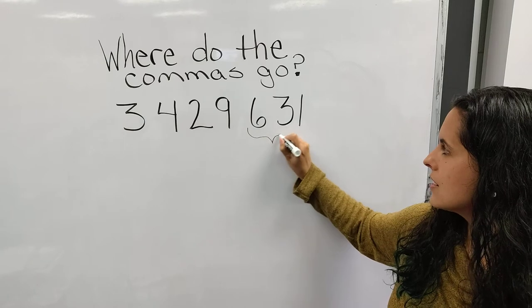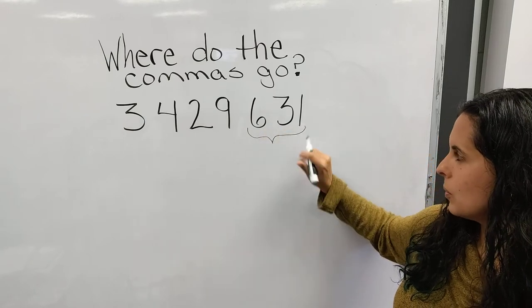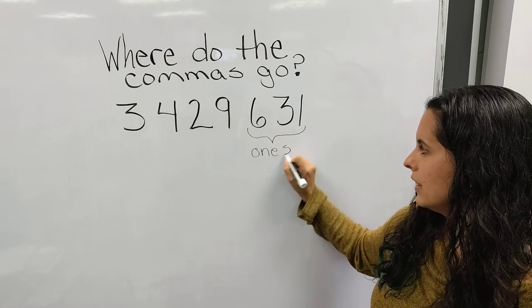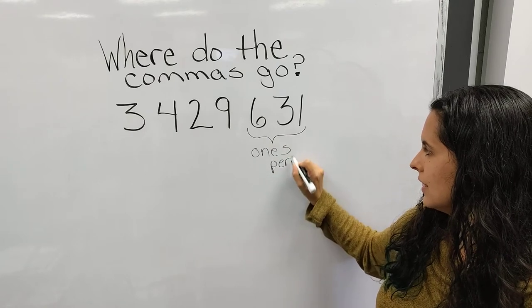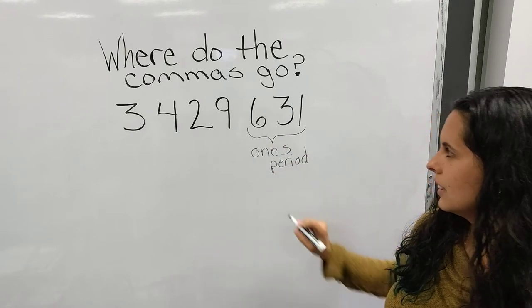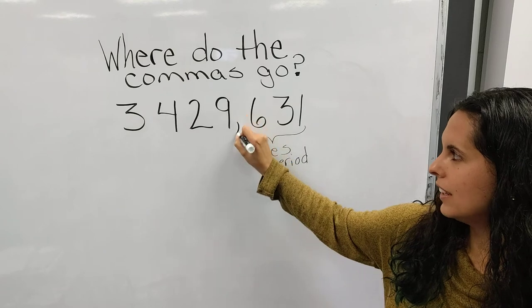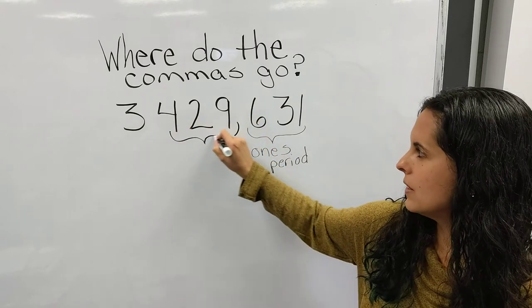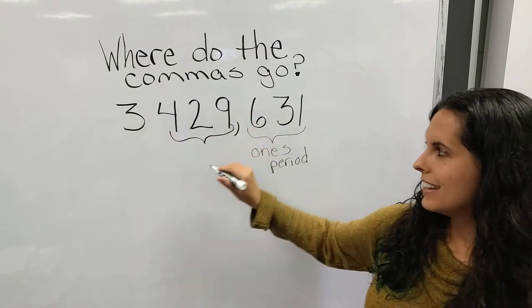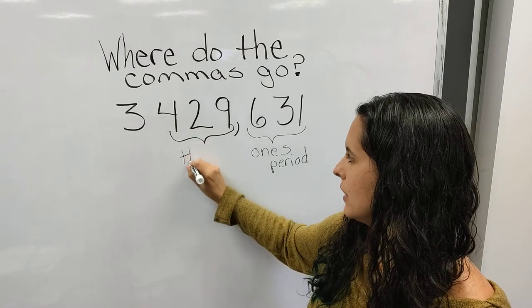But these numbers here, 631, that's part of the ones period. And that's why there's a comma here to separate it from this part. And that is your thousands period.